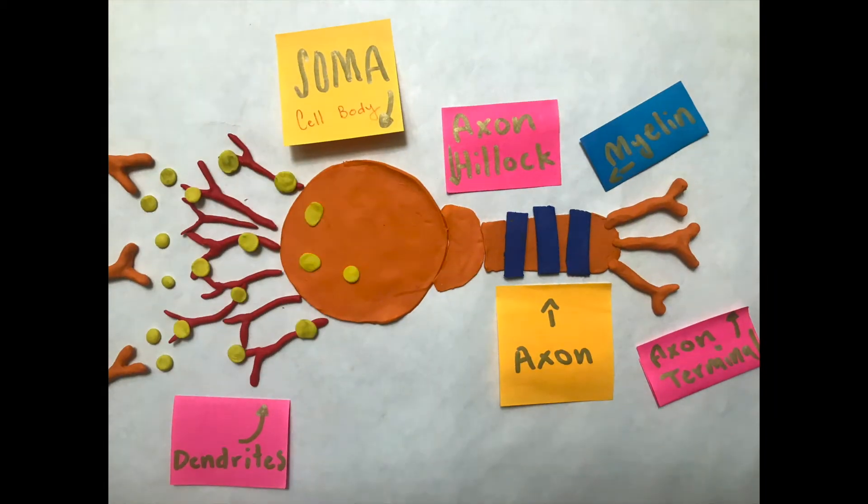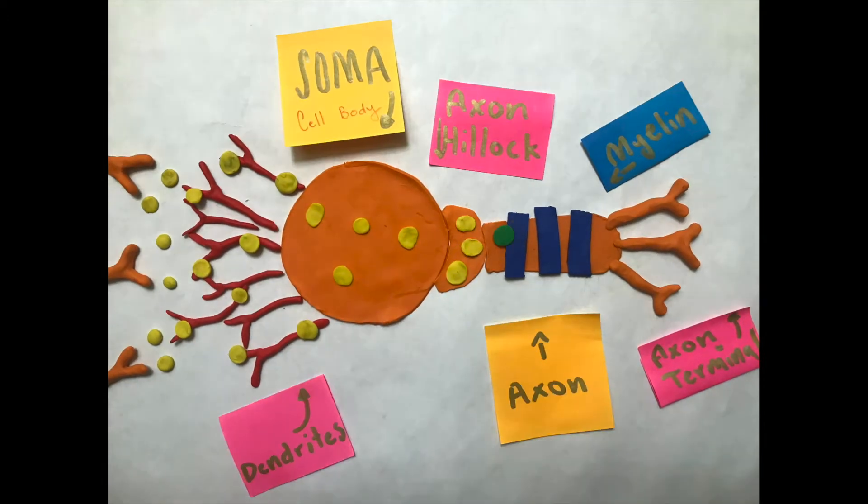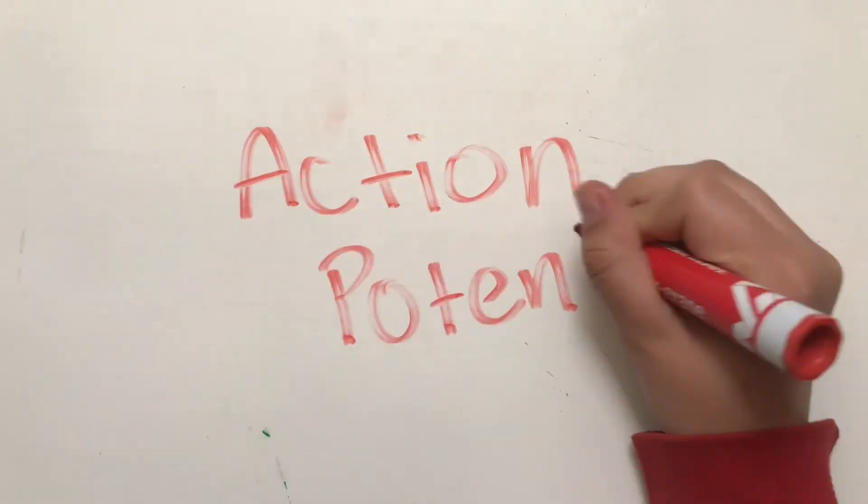The soma then interprets the chemicals and takes the information and places it in the axon hillock. If the signal is strong enough, then it gets converted into electric signals called action potential.